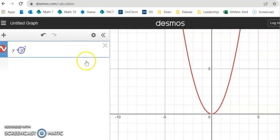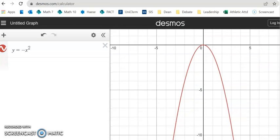That's facing upwards because all values of y are positive for any x. Now if we have y equals negative x squared, regardless of the value of x, y is always going to be negative. So let's put it negative. There we go.